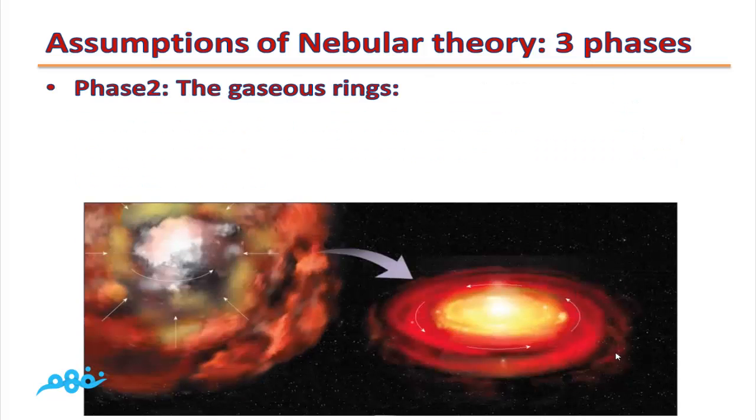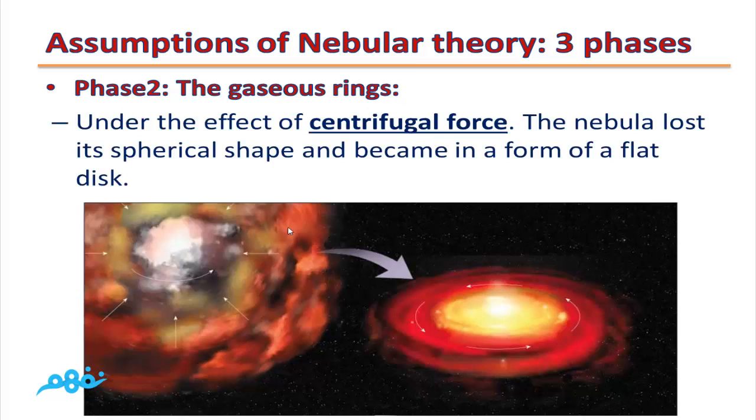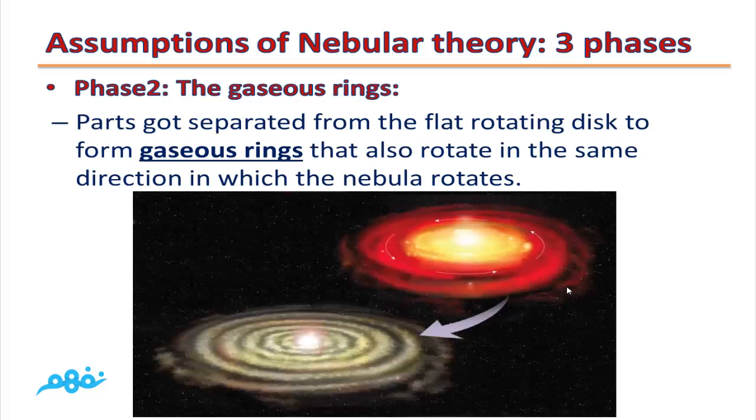Phase two, the gaseous rings. Under the effect of centrifugal force, the nebula lost its spherical shape and became in a form of a flat disk. Parts got separated from the flat rotating disk to form gaseous rings that also rotate in the same direction in which the nebula rotates.